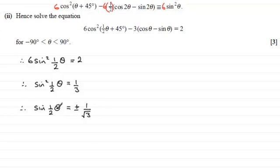And so to get ½θ, I've just got to take the inverse sine to both sides. So we've got ½θ equals plus or minus the inverse sine of 1 over root 3.